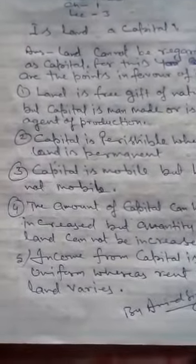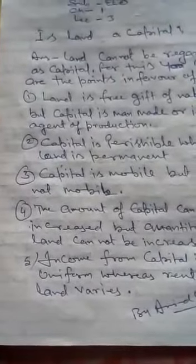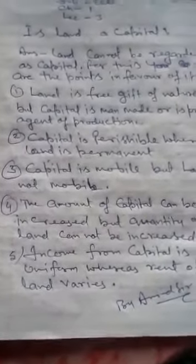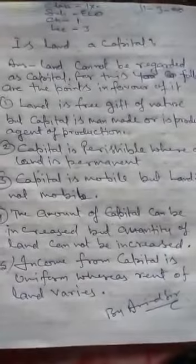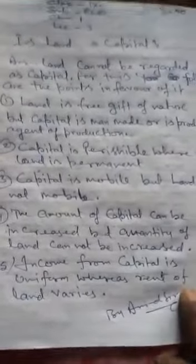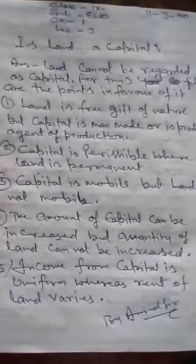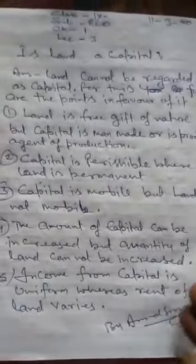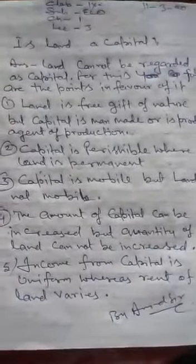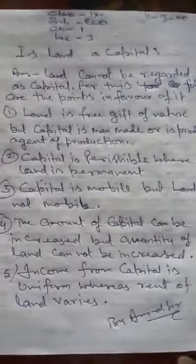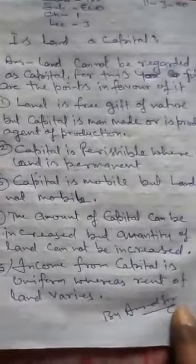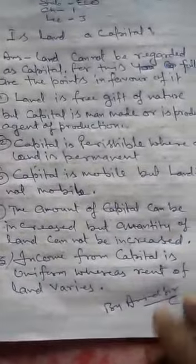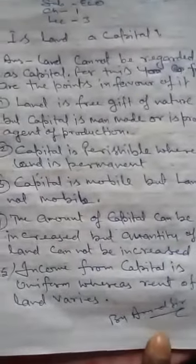The next point is: the amount of capital can be increased, but the quantity of land cannot be increased. Whatever capital you have, you can add to it. But the quantity of land is fixed — you cannot add to it. For example, if you purchase someone else's land, it is the same land added to yours, but whatever land is available on this planet will not increase.